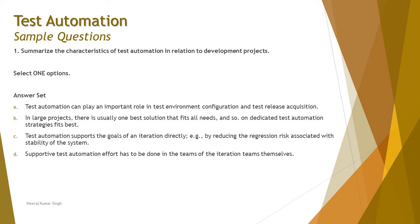Option A: the test automation can play an important role in test environment configuration and test release acquisition. Generally, when you talk about test automation creation, it covers the test environment, test release, and a lot of contributions are made with respect to test automation. The number of tests being automated allows decisions to be made with respect to the outputs, and test environment configuration is another important aspect.